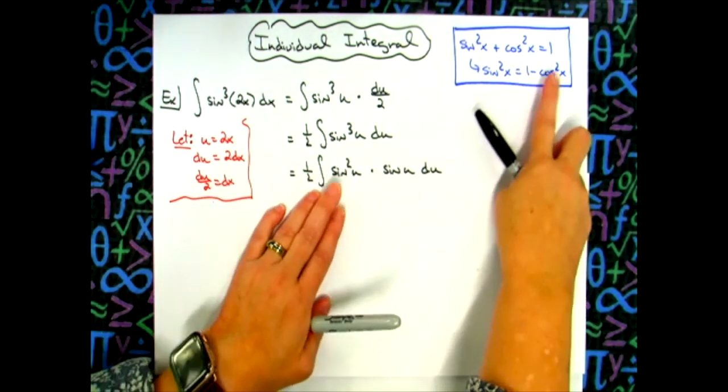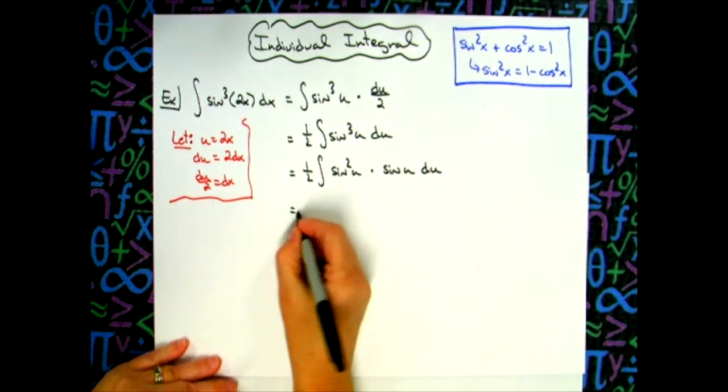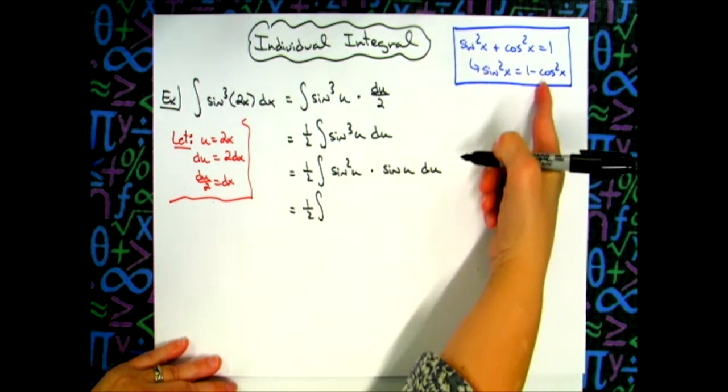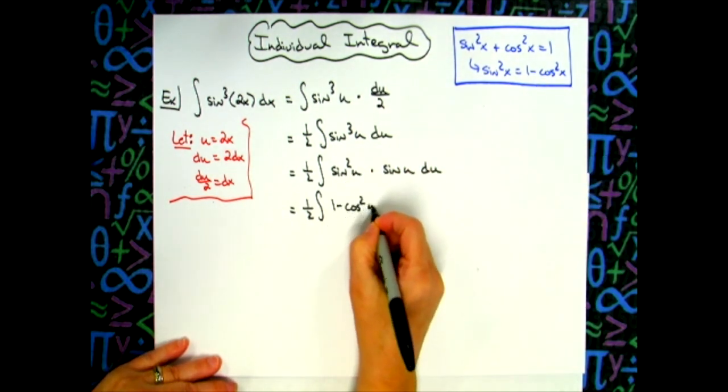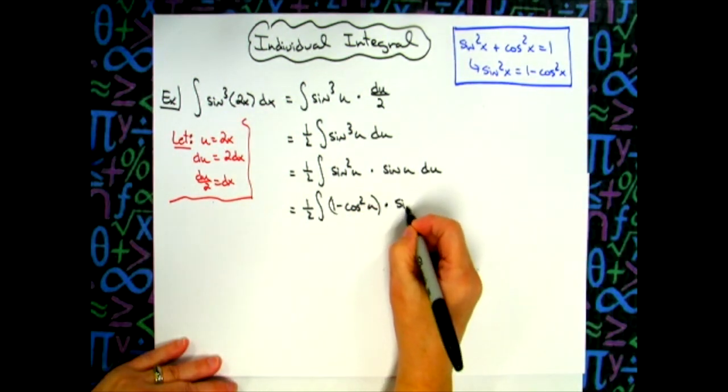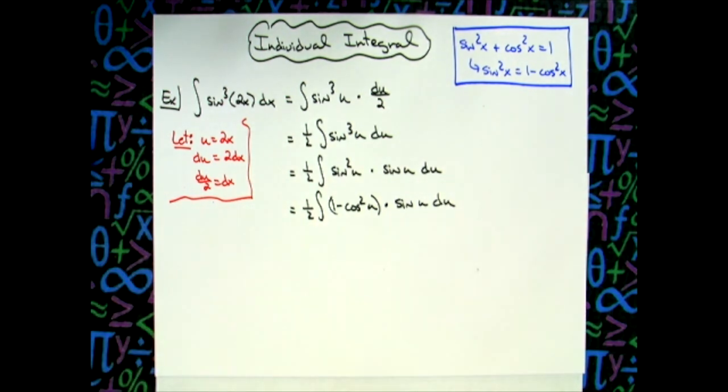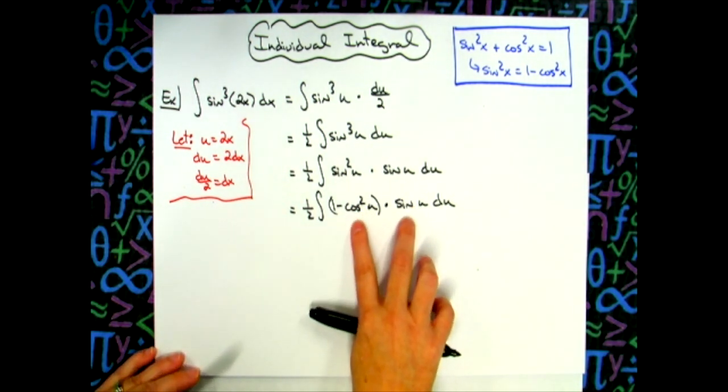Now I'm going to do a substitution. So I will have one half the integral, substituting that for what it equals: one minus cosine squared of u, and then times that extra sine that we've got out there, du. Now we've got to be able to get this down to something that we can integrate. So I'm going to have to do another substitution here.